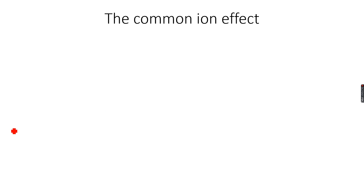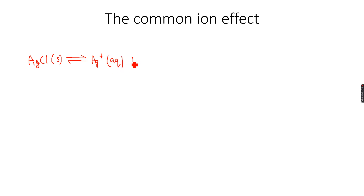Now we have something called the common ion effect. Consider AgCl solid in a reversible reaction: AgCl(s) ⇌ Ag⁺(aq) + Cl⁻(aq). This is the solubility of AgCl in a saturated solution — all of it has dissolved, giving Ag⁺ and Cl⁻ ions in dynamic equilibrium.